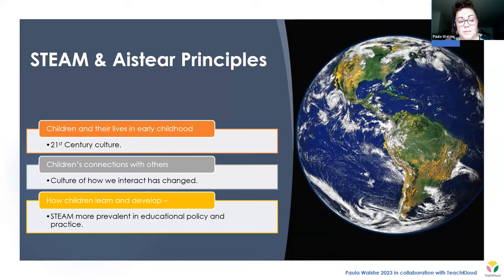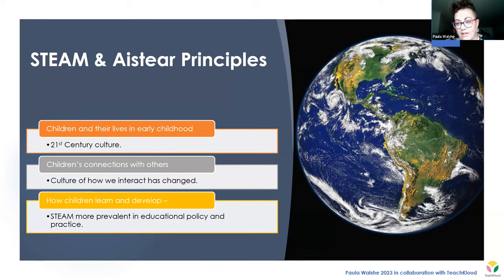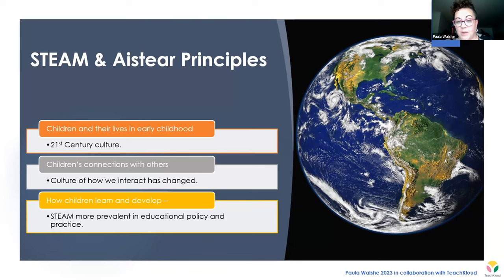If we think about another Aistear principle — children's connections with others — the culture of how we interact with people has very much changed. We're interacting this evening over Zoom, which incorporates technology and science, because there's science behind wireless and Bluetooth technologies. At its very basic level, technology is just a combination of ones and zeros. There's engineering too, because laptops and cameras are feats of engineering developed to facilitate the technology. The way we interact with each other has really changed — if we think back to COVID, children having video calls with their grannies. Even when we go into a shop, the way we pay for things has changed. All of those STEAM principles are very relevant to how children interact with others and the world.